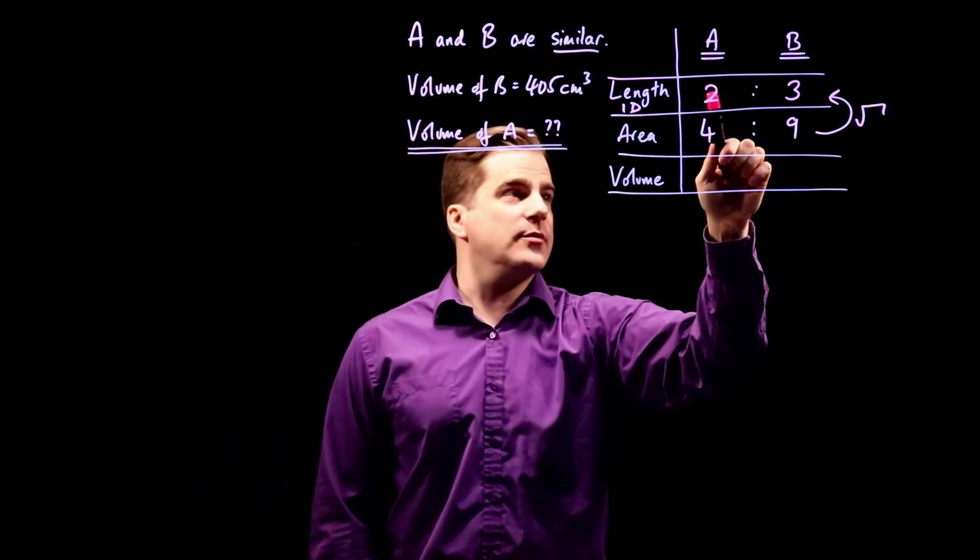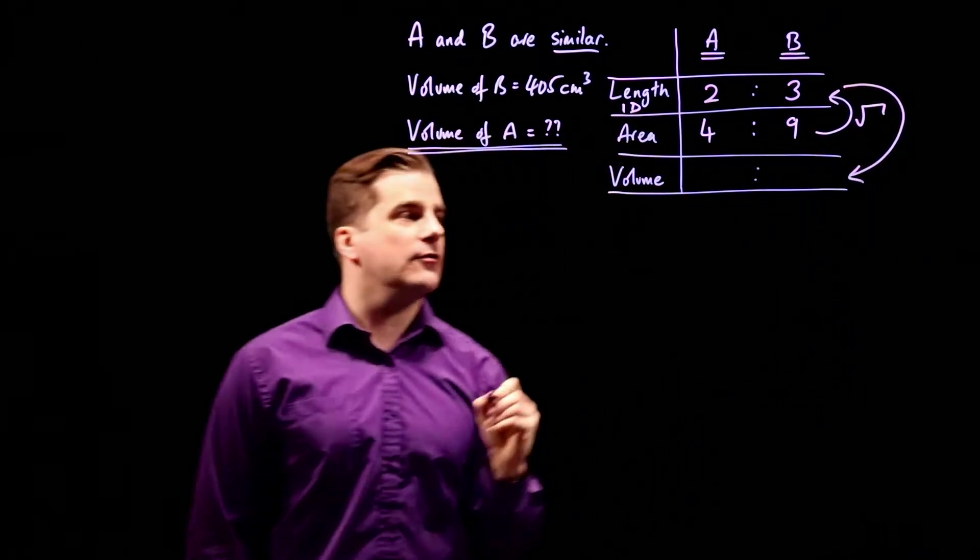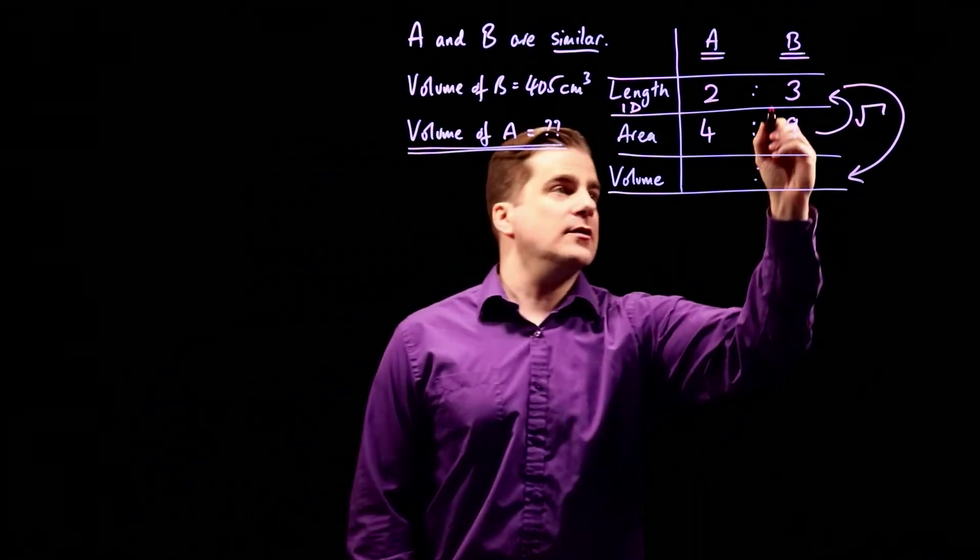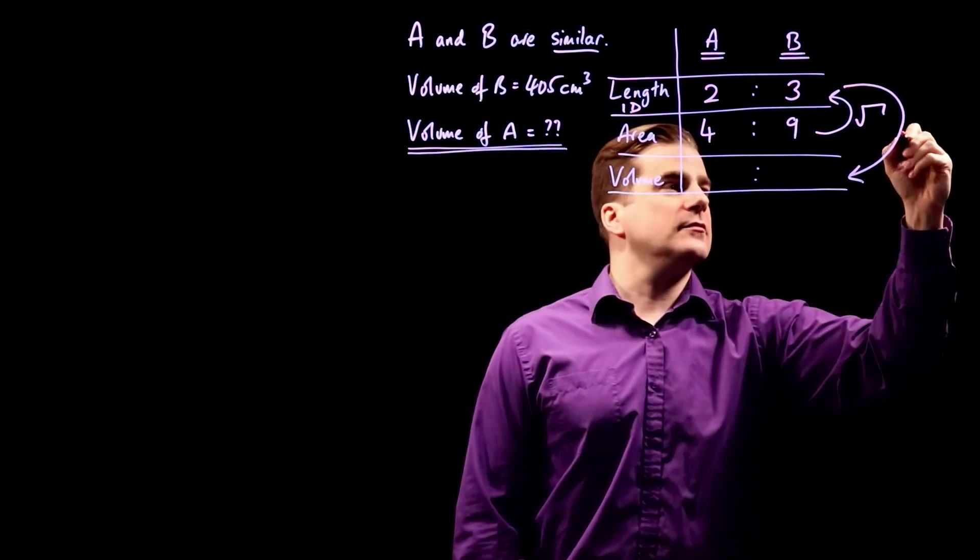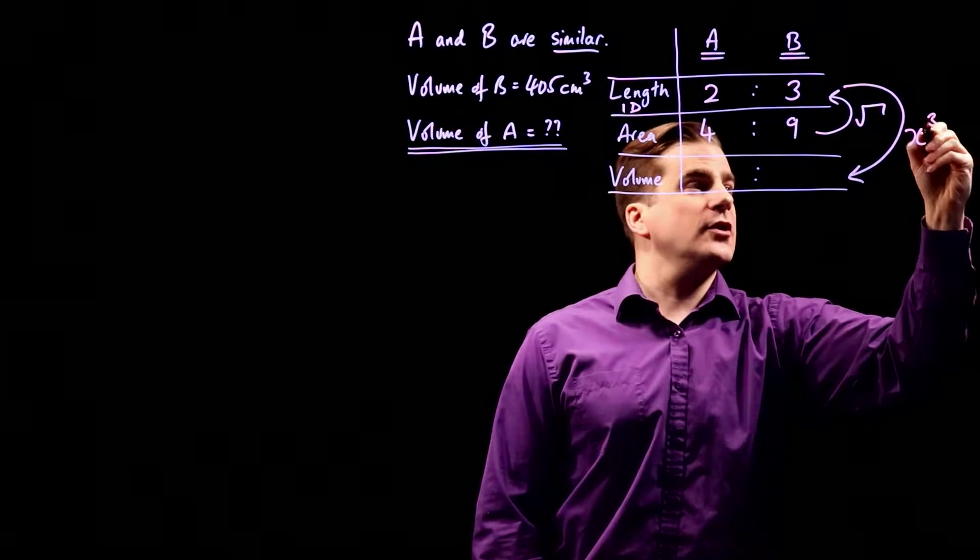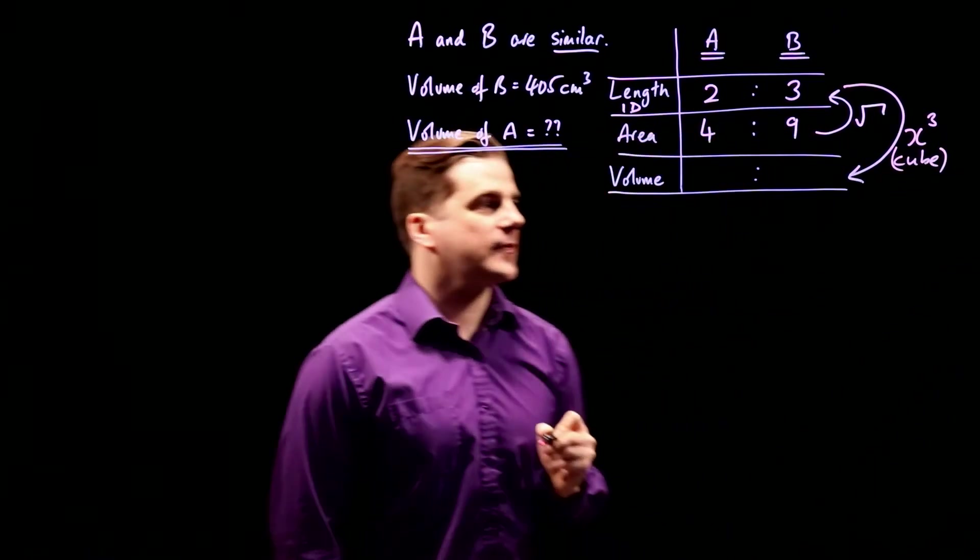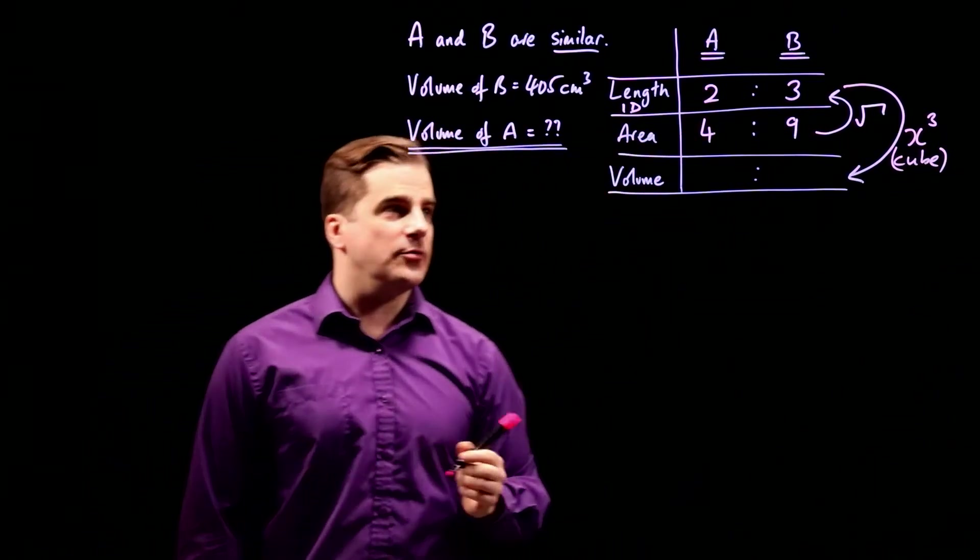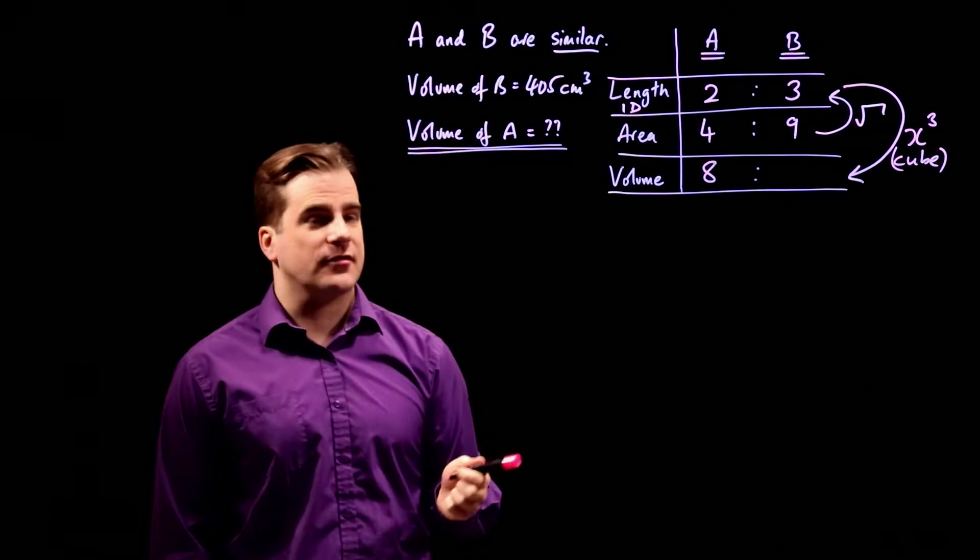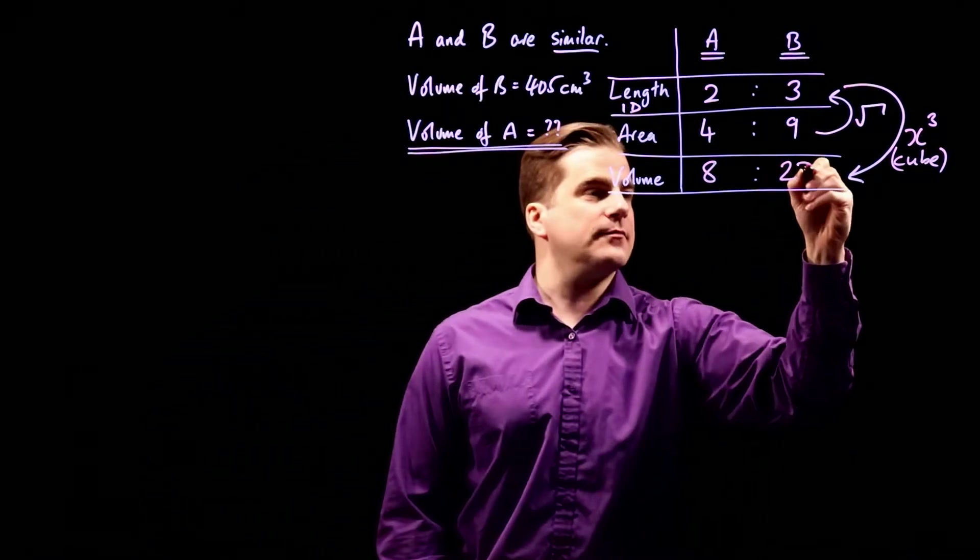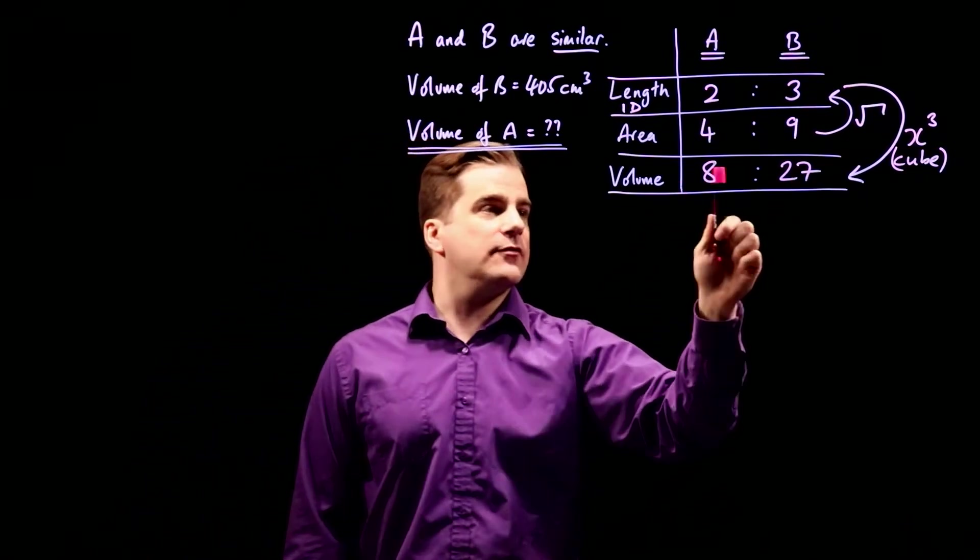And now, once we know that, we can work out the ratio of the volumes of A and B. You simply cube these numbers. So you've got the number and you just cube it. So what's two cubed? Well, it's two times two times two, which is eight. What's three cubed? Three times three times three is 27. And that's it. That's how you find the ratio of the volumes of A and B.